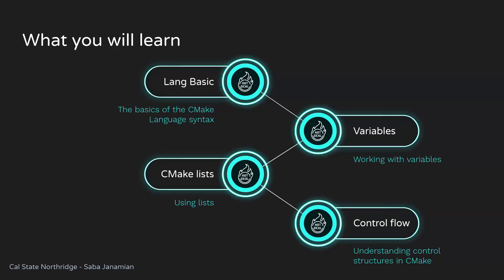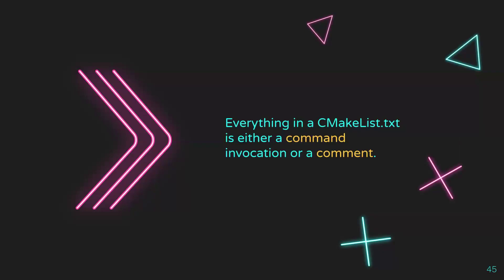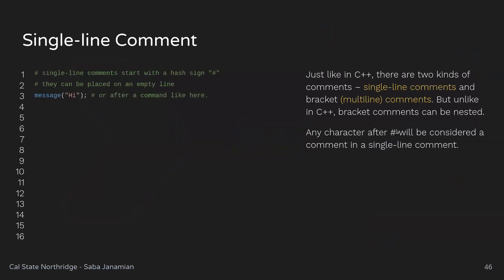What you'll learn from these slides: we're going to cover the basics of CMake, variables in CMake, CMake lists, and CMake control flow — basically focusing on CMake syntax. The basics of CMake language syntax: remember, everything in CMakeLists.txt is either a command or a comment. Nothing else. Even setting up variables uses a command, and creating functions is done by commands. Everything in CMakeLists.txt is always a command or a comment.